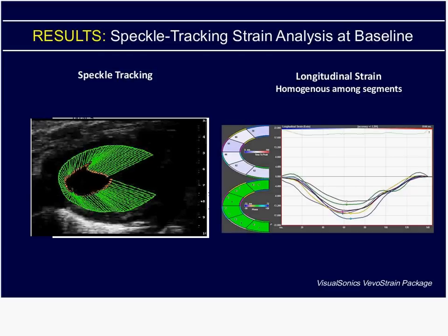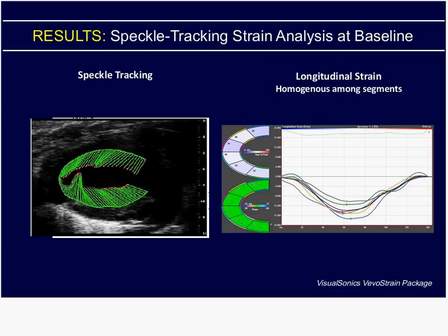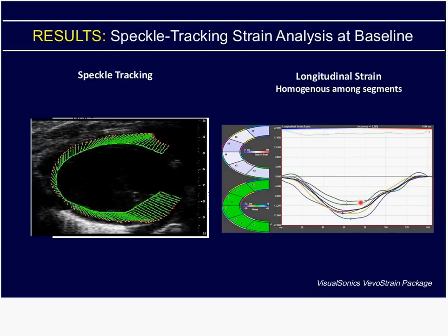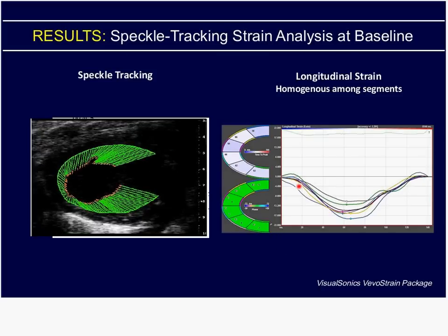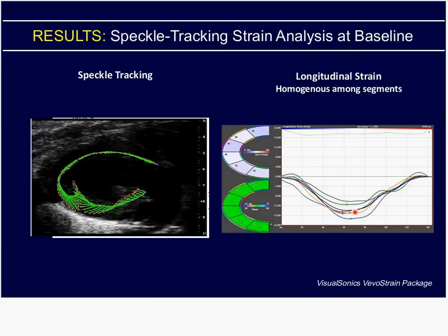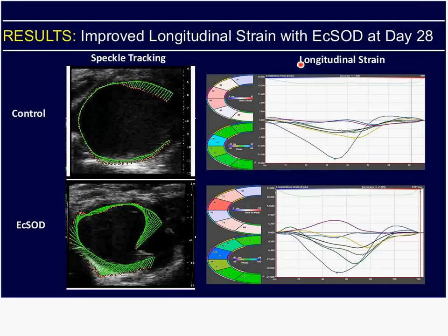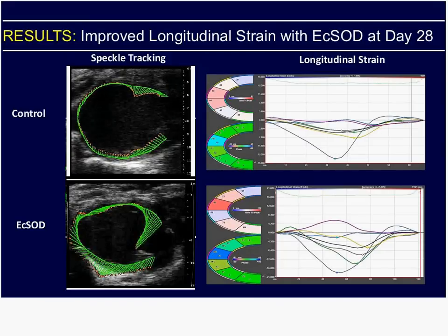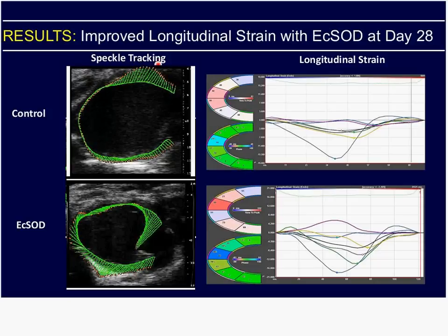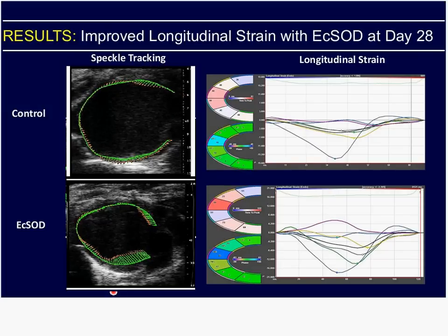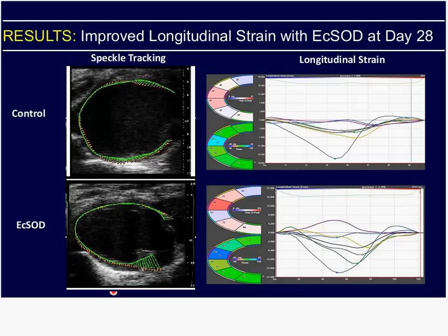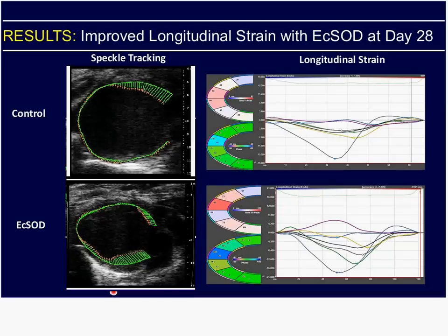Let's turn now to an even higher level of analysis: speckle tracking. We'll look at the VivoStrain output in a normal mouse. Looking at longitudinal strain, in each of the segments it's highly homogeneous and behaving like a normal mouse should. We'll look at day 28 after MI in control mice — we've got a basketball-shaped heart, very little wall motion in the infarct zone, and basically this mouse is living off the basal aspect of the heart.